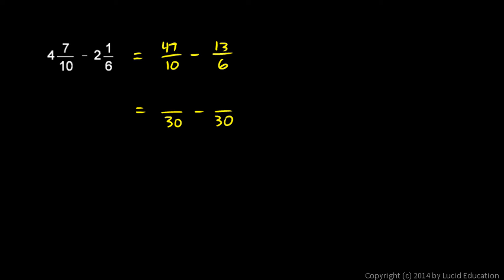So to get from 10 to 30 I had to multiply by 3. So what goes here is the 47 multiplied by 3, and that's 141. To get from the 6 to the 30 I have to multiply by 5. So 13 multiplied by 5 will go in the numerator of the second fraction, and 13 times 5 is 65. So now I have 141 over 30 minus 65 over 30. And that's equal to 76 over 30.